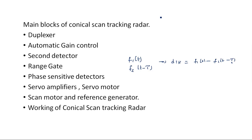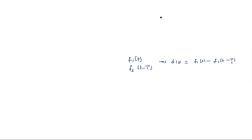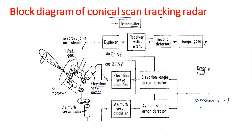This is the complete block diagram of the error signal generation and feedback to the servo motors to rotate the plate of the antenna.